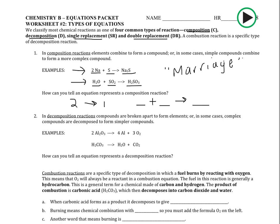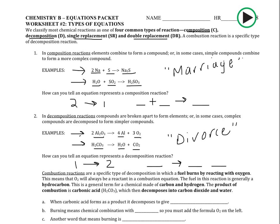The opposite of a composition reaction is a decomposition reaction. While the word composition means to make something, decomposition means to break something down. If you look at the examples, in each of them you start off with one thing and it breaks apart into two things. This would be the divorce reaction — you have one thing to the left of the arrow and two things to the right.